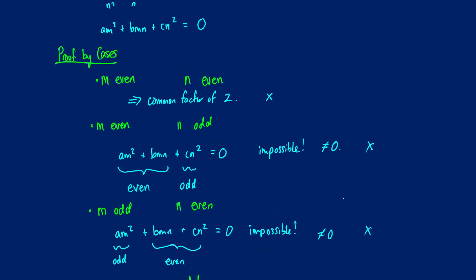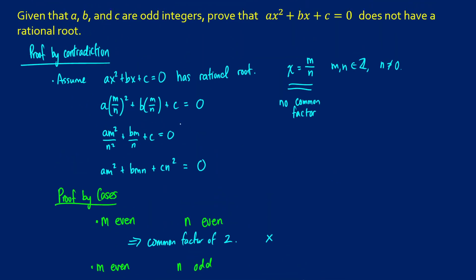So no matter which case that we pick, if we assume that ax squared plus bx plus c equals 0 has a rational root, we cannot make this work. We cannot get any combinations of m and n's in terms of evens or odds where this equation will have a proper solution. Therefore, we can say that there is no rational root.